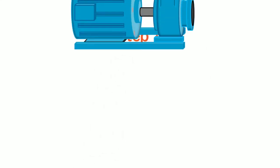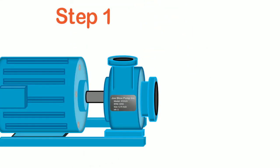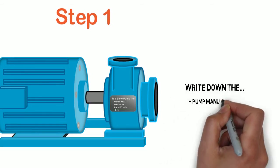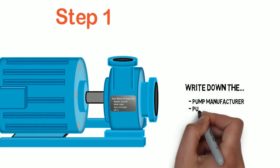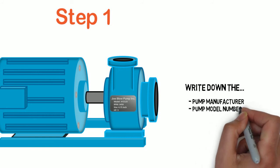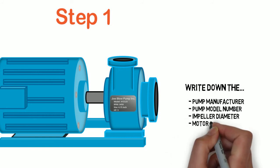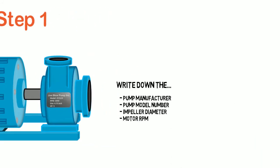Step 1: Go to the pump you're working on, find the information tag, and write down the manufacturer, the model number, the impeller diameter, and the motor RPM.